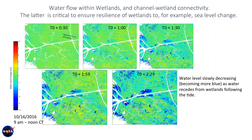This is the UAVSAR measurement of the Wax Lake outlet. The changes in color shown every half hour indicate water level change in the marshes, revealing the connectivity between the wetland channels and the marshes themselves. This connection is extremely important for the resilience of these systems — this is how the channel network feeds sediments into the marshes so they can keep up with sea level rise. These areas have never been seen before, making this a very important result.